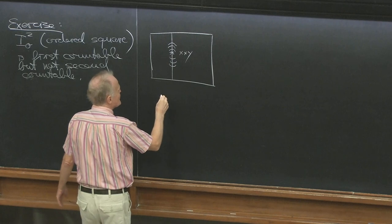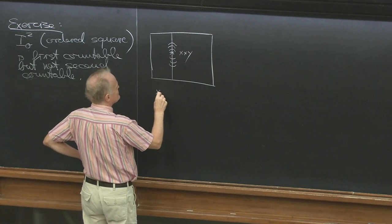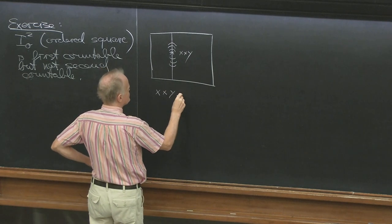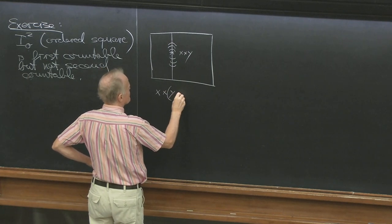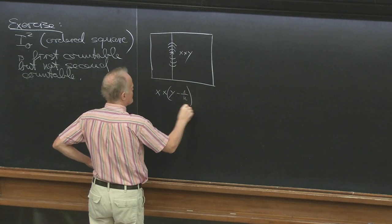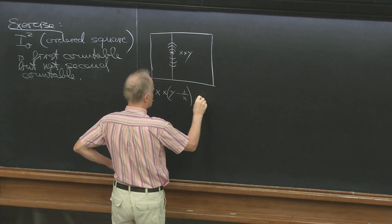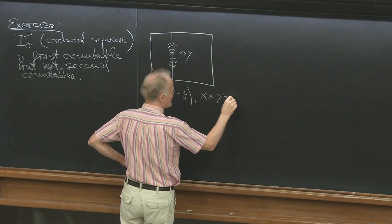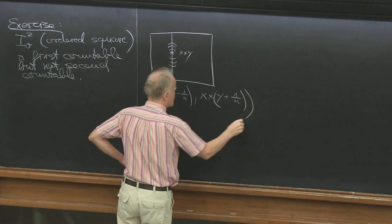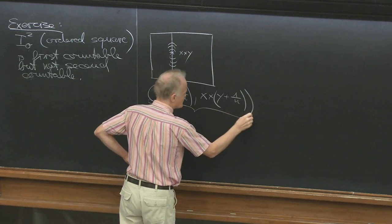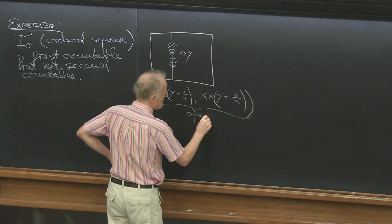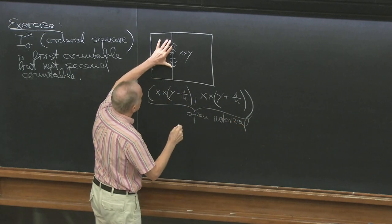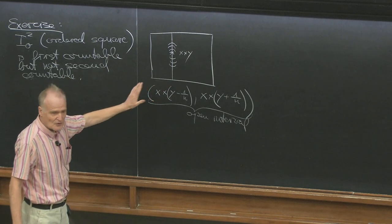So what are these neighborhoods? These neighborhoods are x cross (y minus 1/n) to x cross (y plus 1/n), so this is an open interval. These are getting smaller and smaller — these open intervals in this point.